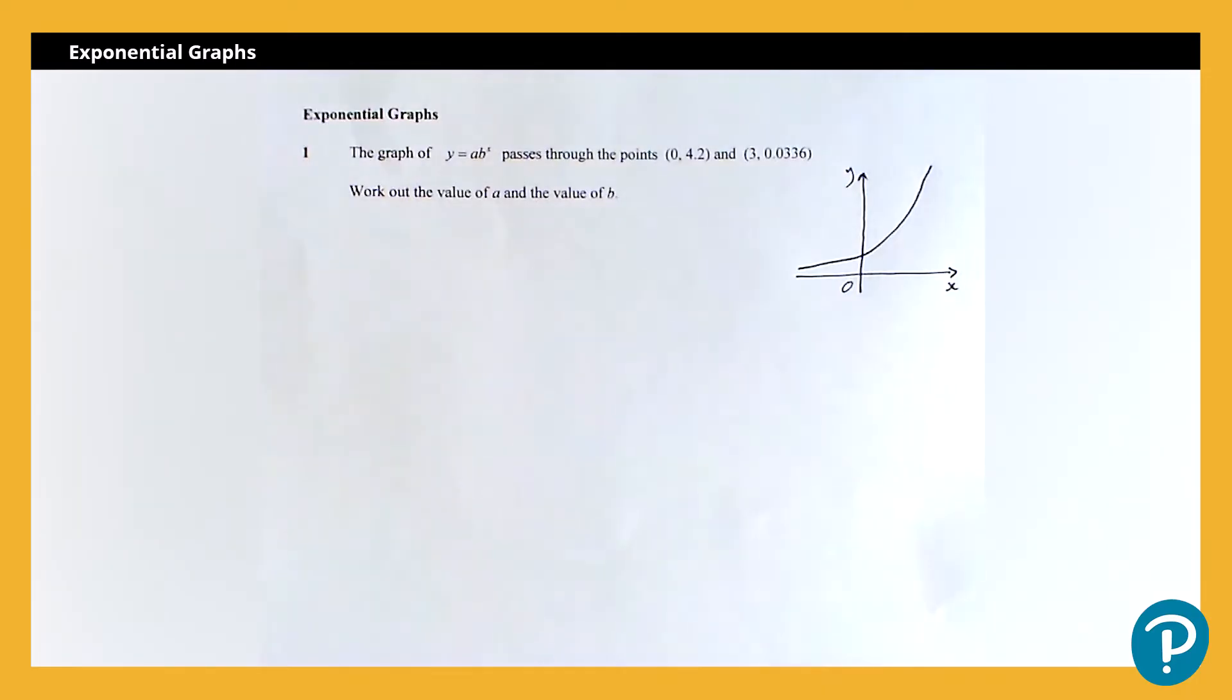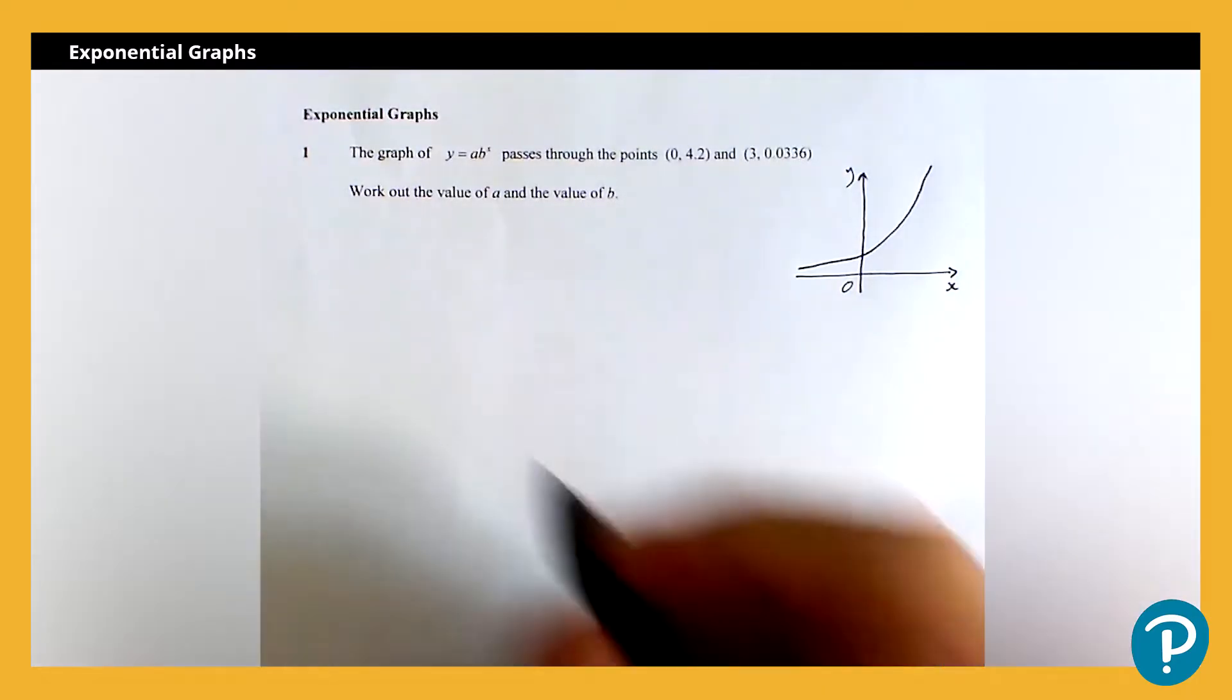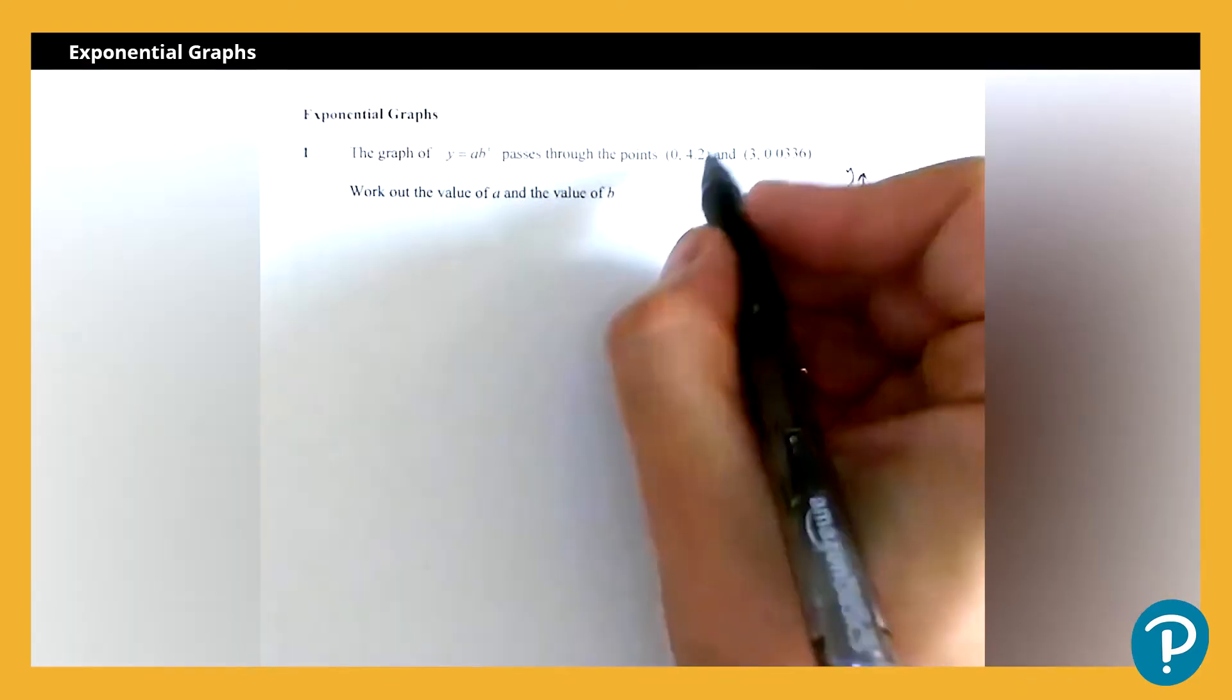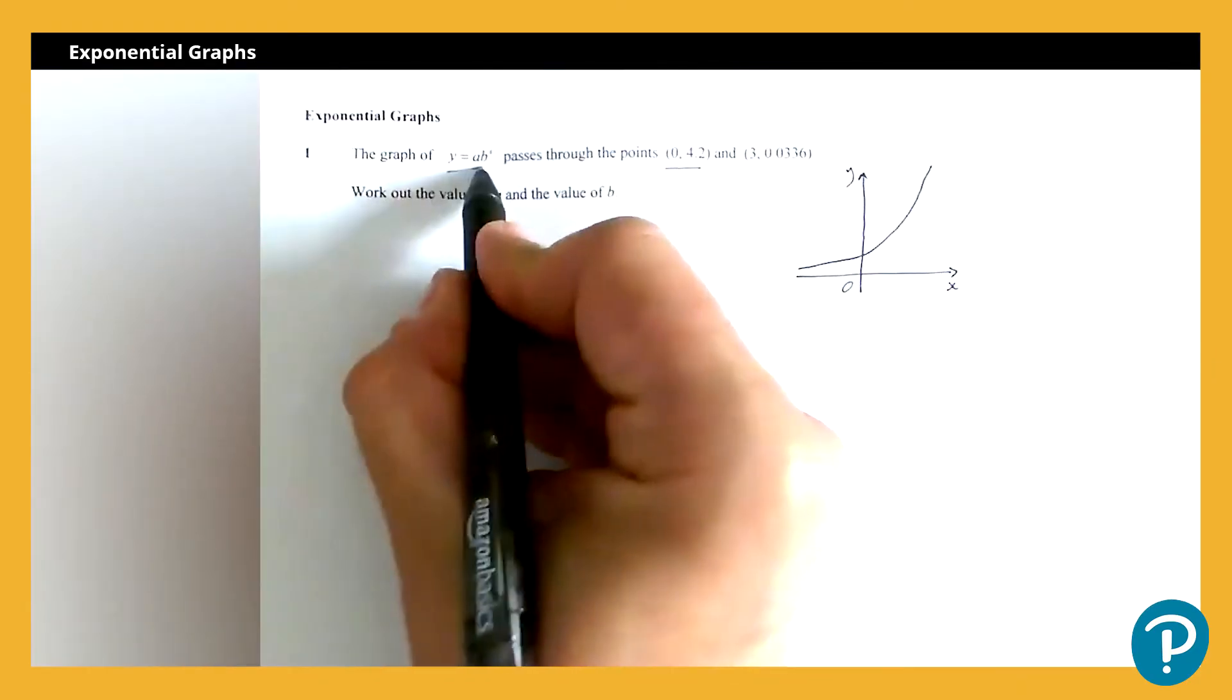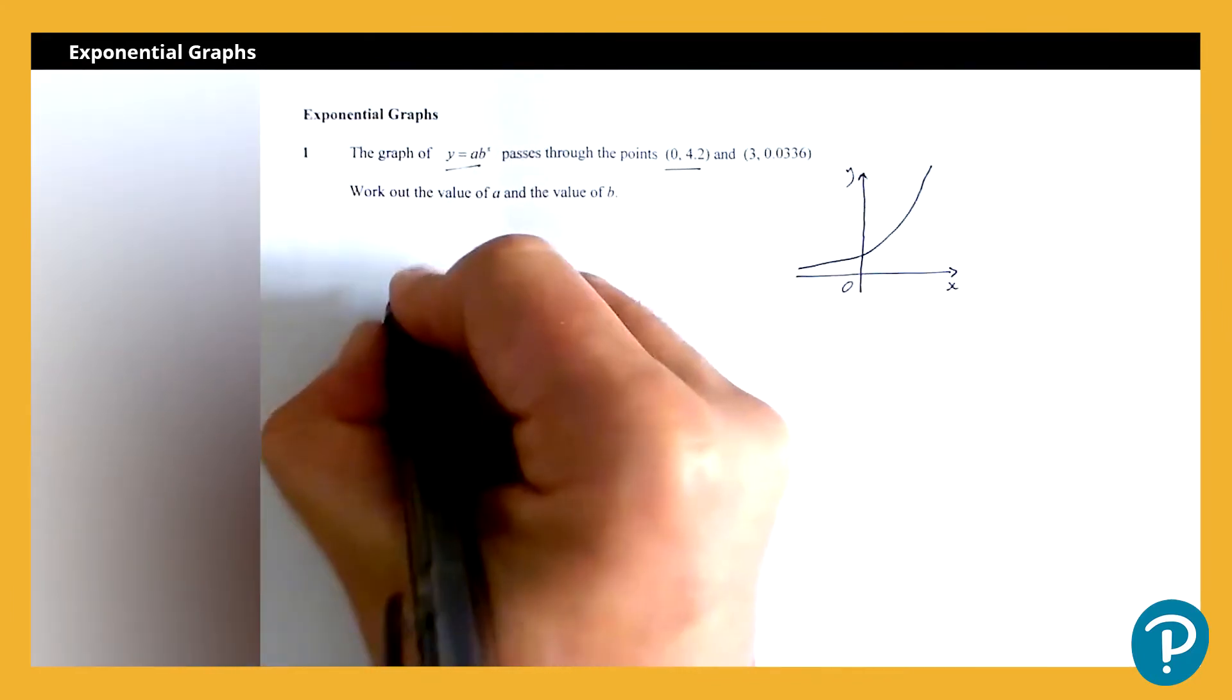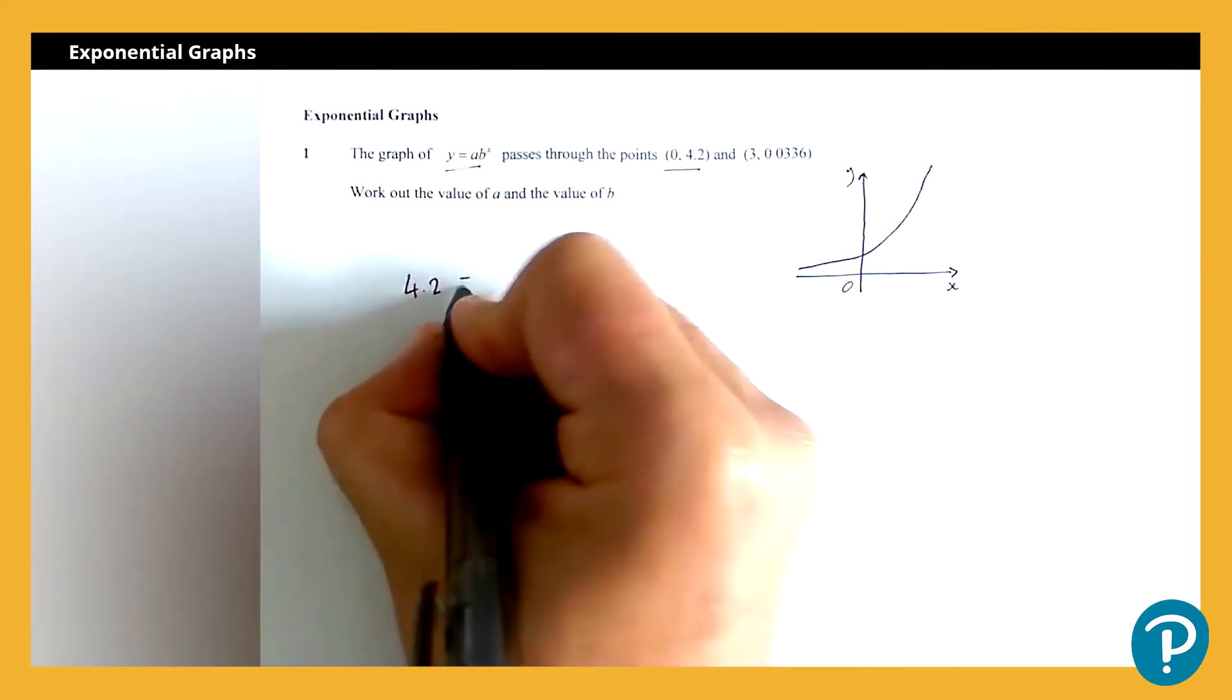We're going to start by substituting the first set of coordinates. So we use this set of coordinates first, and if I substitute them into the given equation that will leave me with 4.2 is equal to a multiplied by b to the power zero.